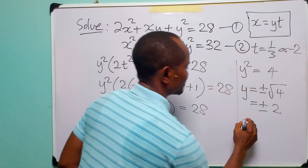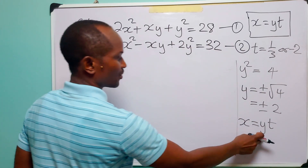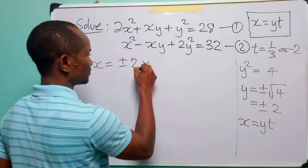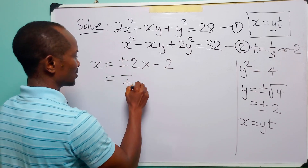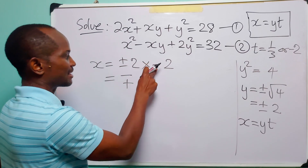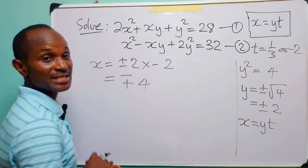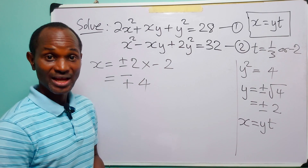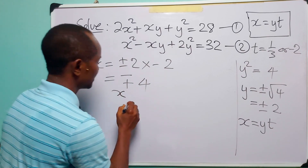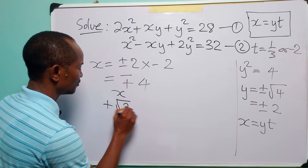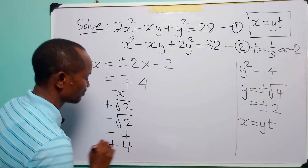For the corresponding values of x, we use x = yt. So x = ±2 times (-2), giving x = ∓4. Specifically, plus 2 times minus 2 is minus 4, and minus 2 times minus 2 is plus 4. So the values of x are -4 and +4, paired with y = +2 and y = -2 respectively.